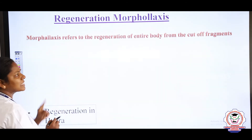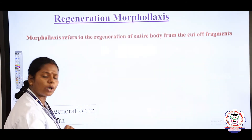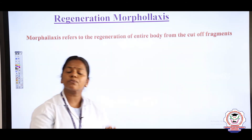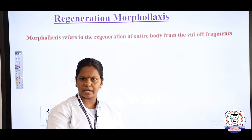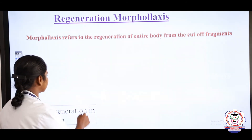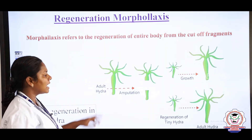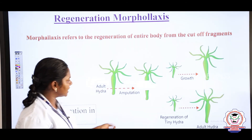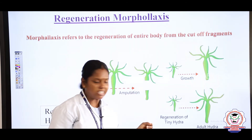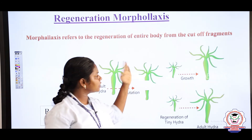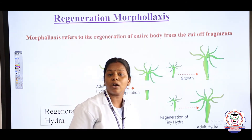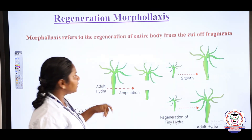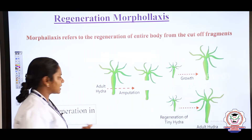What do you mean by morpholysis? If the entire body is formed from the cut-off fragments, it is said to be morpholysis. The best example is hydra — due to some accident, if hydra is cut into pieces, each part develops into the entire organism. This is regeneration in hydra.